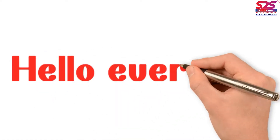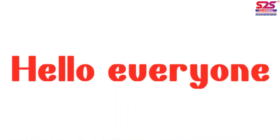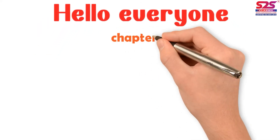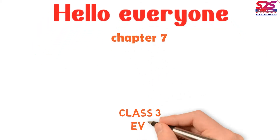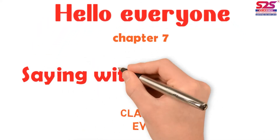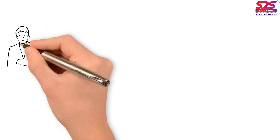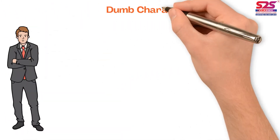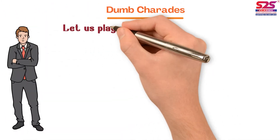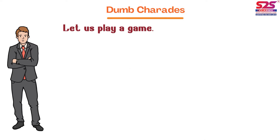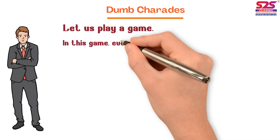Hello everyone. In this video we'll study Chapter 7 of Class 3 EVS, that is 'Saying Without Speaking.' Here we are first reading about a game called Dumb Charades. Now let us play this game.